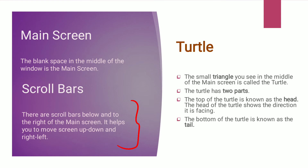The fifth component is the turtle. That small triangle you can see in the middle of the main screen is called the turtle. The turtle has two parts. The top of the turtle is known as the head, and the head shows the direction the turtle is facing. The bottom of the turtle is known as the tail.